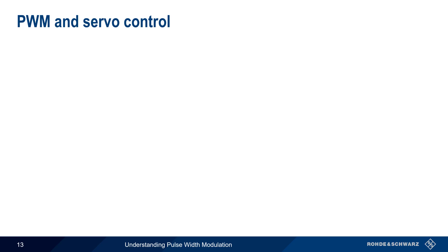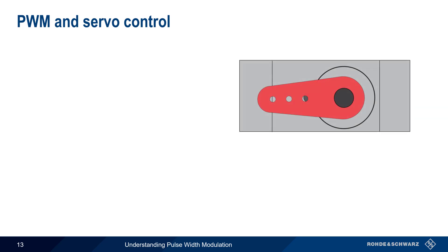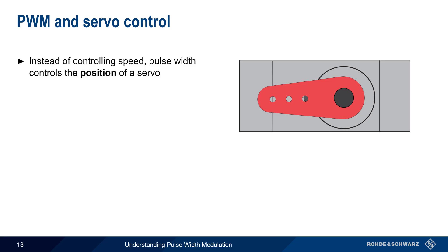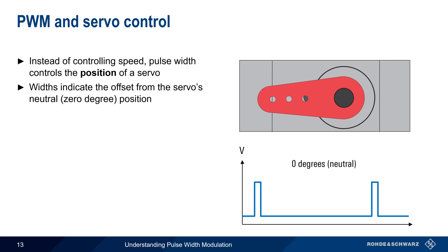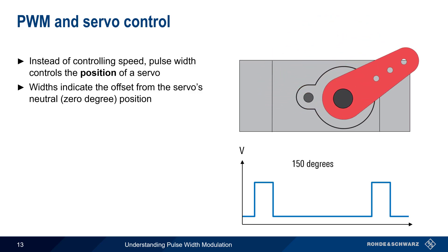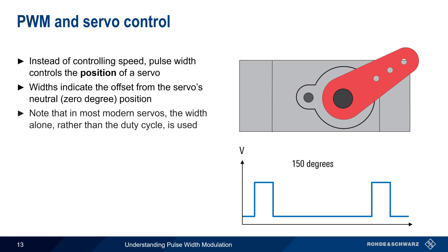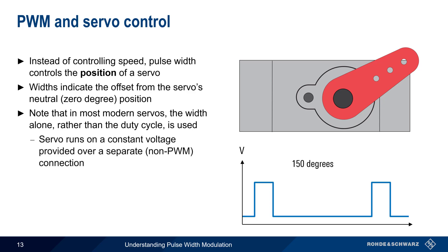A special case of DC motor control is servo control. Instead of controlling speed, here pulse width is used to control the position of the servo. The pulse widths indicate the offsets from the servo's neutral or zero degree position. For example, pulses with one width are used to place the servo in the neutral position, but pulses with a different width are used to rotate the servo 150 degrees. It's important to keep in mind that in most modern implementations, the width alone — not the duty cycle — is used to control the servo position. Servo power is provided over a separate, non-pulse width modulated, constant voltage connection.